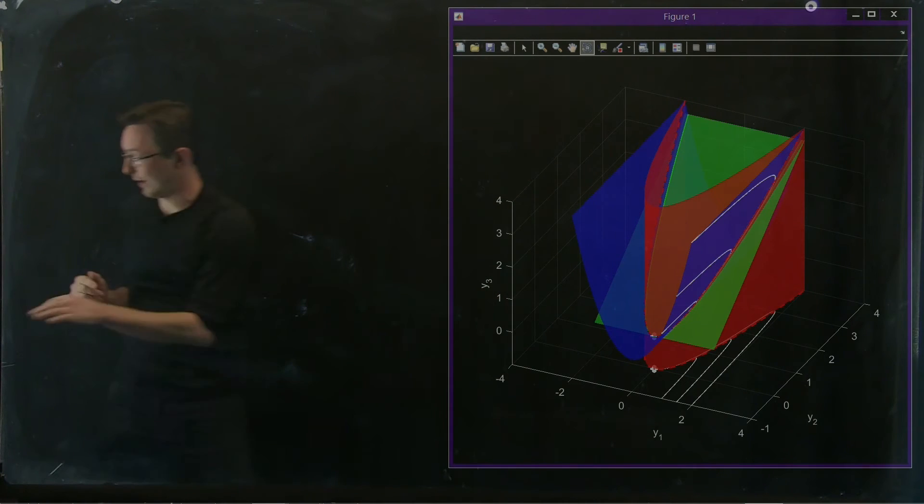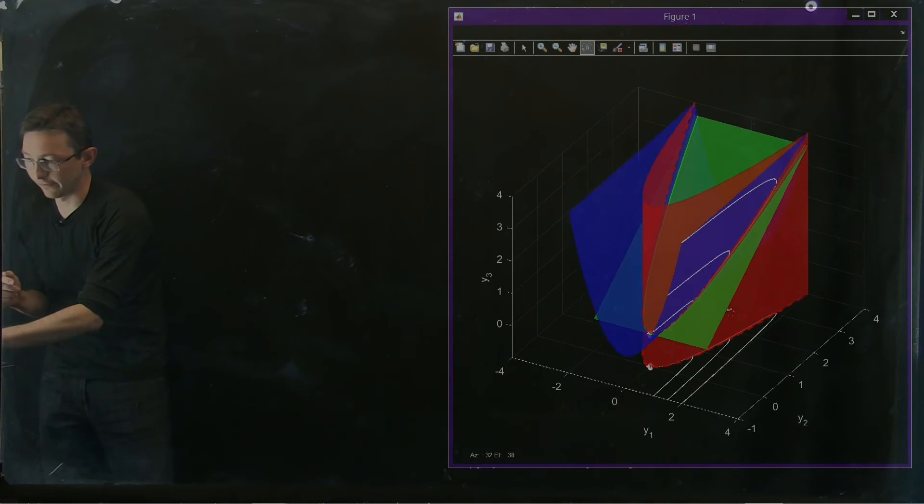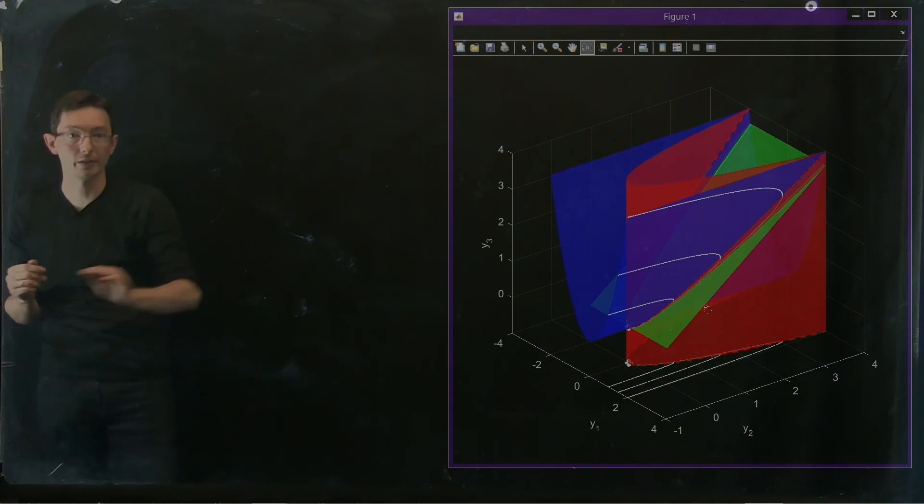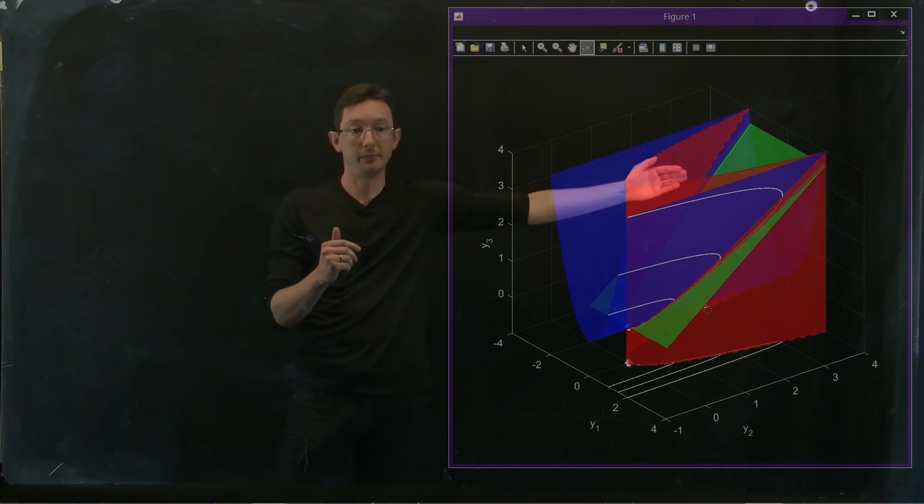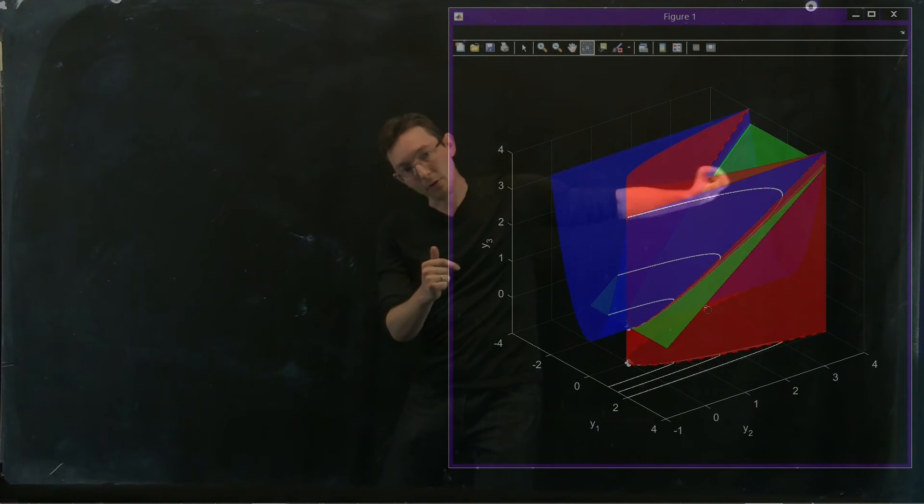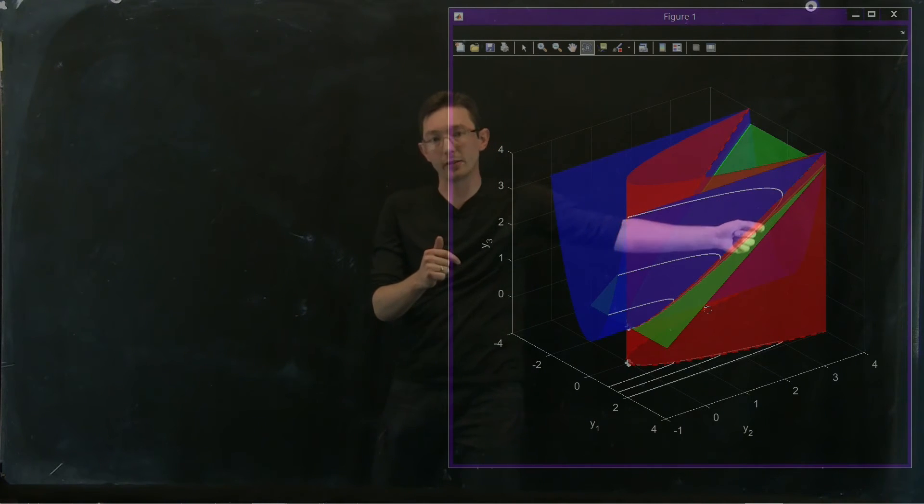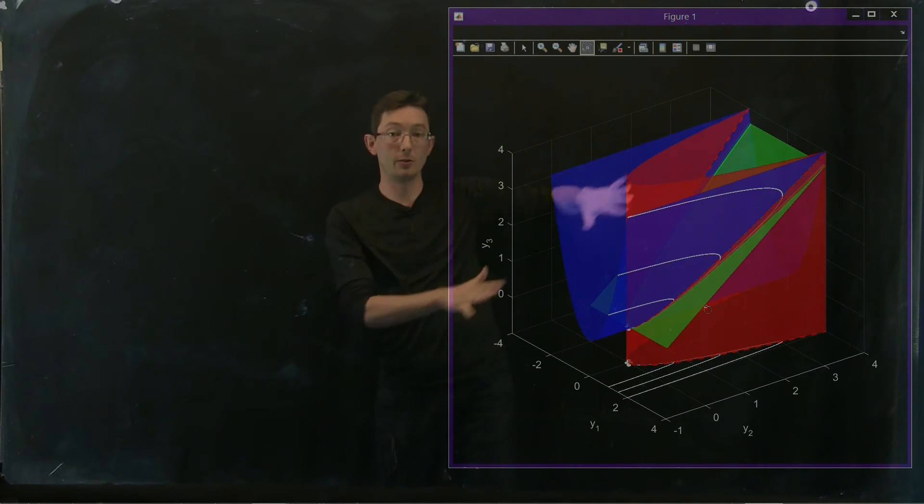And notice that I have these white trajectories here, these are my full initialized trajectories of my Koopman linear system. And they move very quickly onto this green, slow subspace.